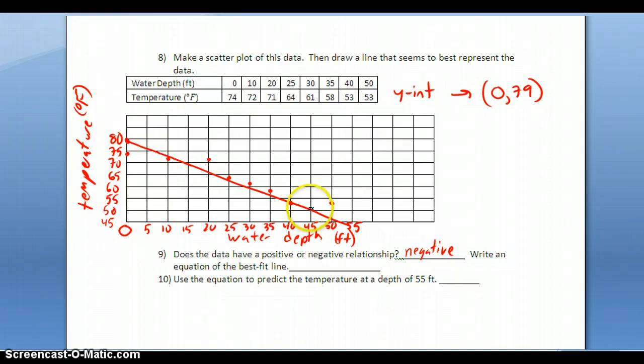I'll use another point on my line - this one here at (45, 50). Even though it's not one of my original data points, it's on my new line of best fit. Now I can find the slope using these two points. Change in y over change in x: (79 - 50) / (0 - 45) = 29 / -45.